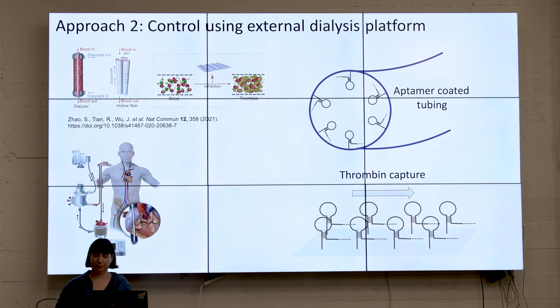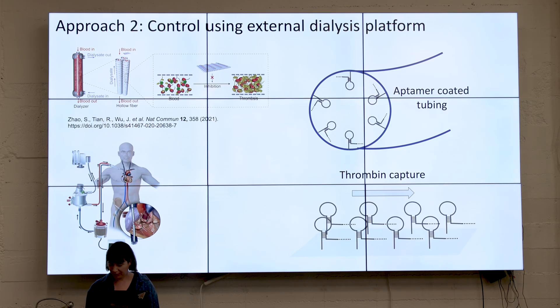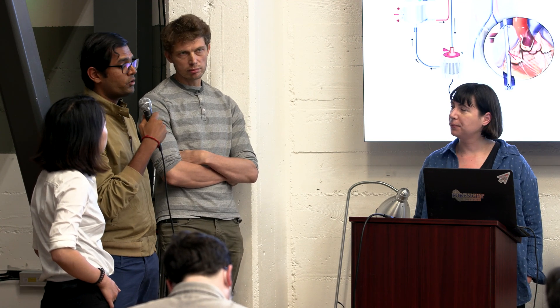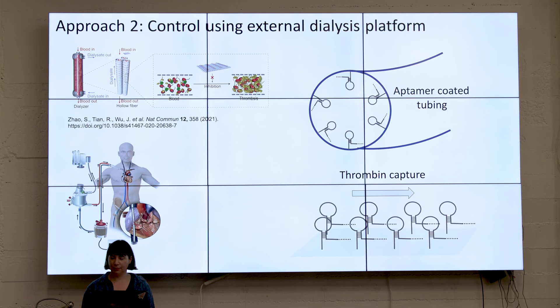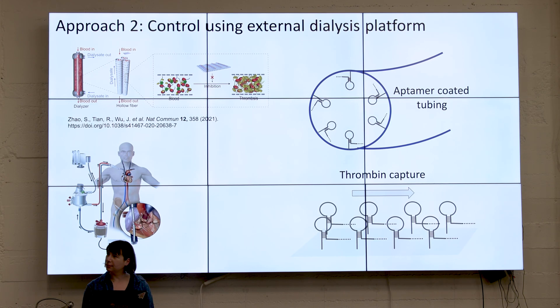Another approach for controlling this coagulation pathway is to use existing hemodialysis. Hemodialysis is probably one of the most common medical procedures in the ER and outside. If we can modify the current machinery, that could be a very good test case. What we propose is having the tubing layered with aptamers, which can basically capture thrombin in this process. There was a similar idea published before using a DNA origami-based breadboard for capturing thrombin. We propose modifying the tubing and, based on the concentration of adhered aptamers, controlling how much coagulation is suppressed.